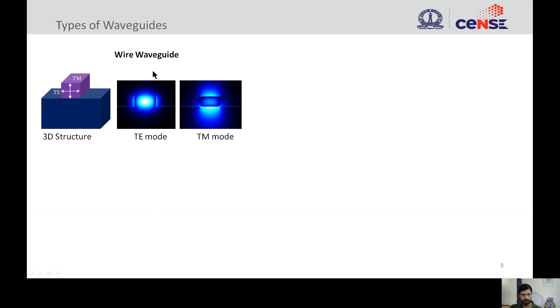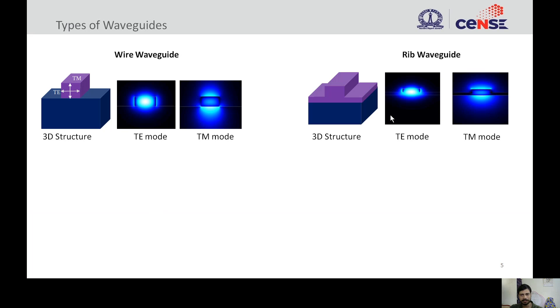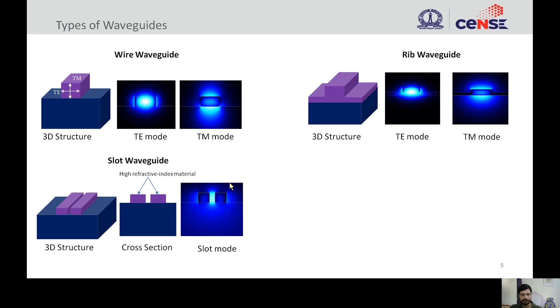Here we show the various waveguides that are used in practice along with the mode profiles. We have wire waveguide which is fully etched, rib waveguide which is a shallow etched waveguide, and slot waveguide where light can be confined in the low index region. In all these structures, the core is made up of a uniform refractive index material, which restricts the tuning of waveguide properties like birefringence, effective index, and dispersion.